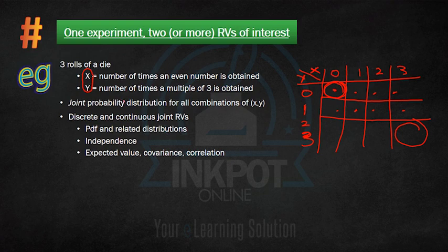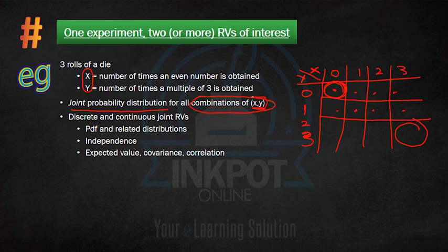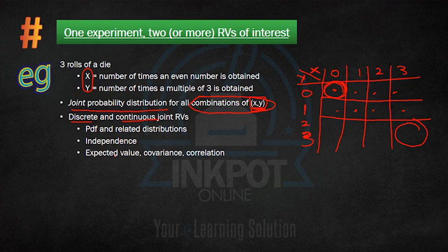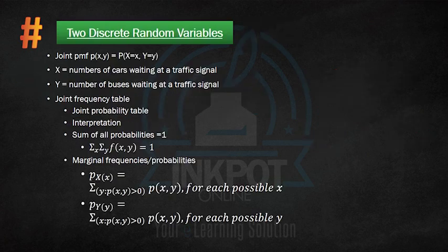Such a probability distribution over two or more random variables is called a joint probability distribution. If you are considering only two random variables, the joint probability distribution is defined for all combinations of x and y. Joint probability distributions can be defined for discrete or continuous variables. We will discuss the PDF of jointly distributed variables, their mean and variance, and additional properties such as covariance, correlation, and independence in future videos.